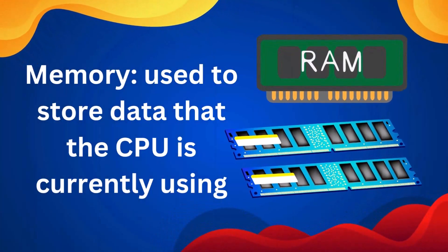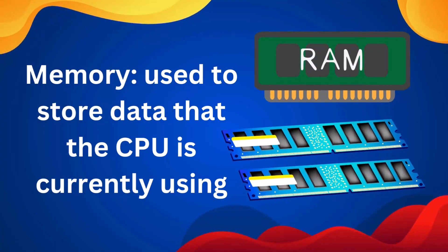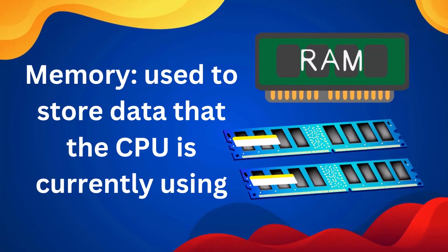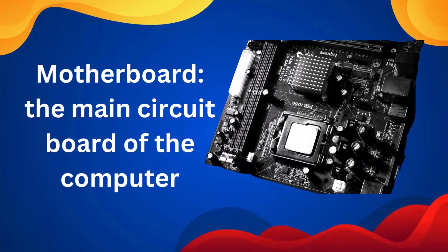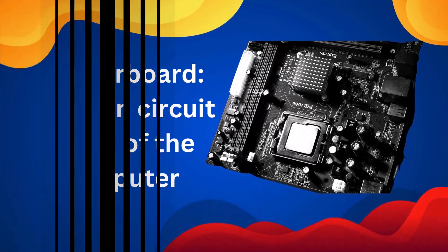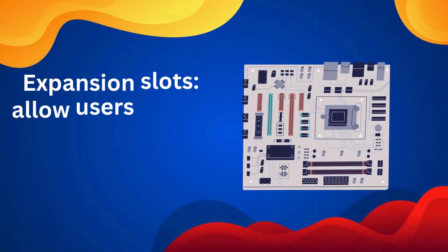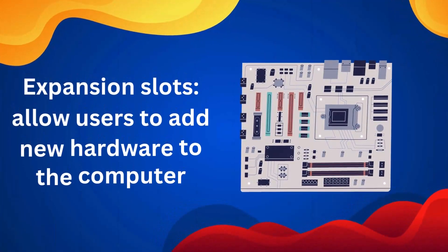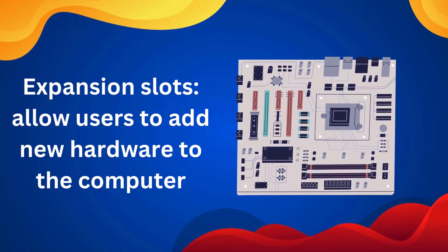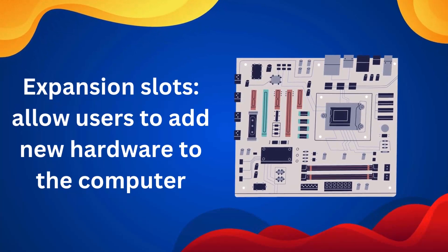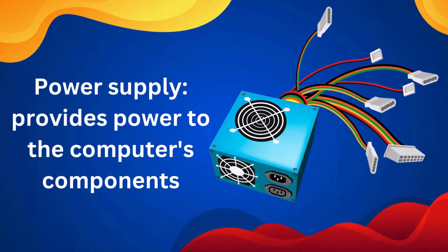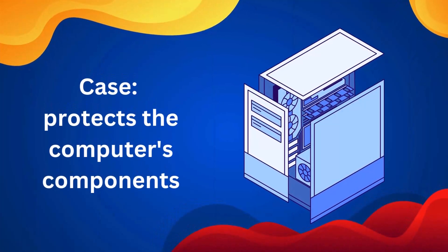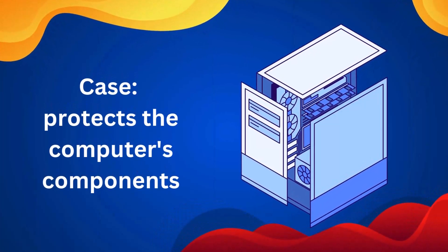Memory is used to store data that the CPU is currently using. The motherboard is the main circuit board of the computer. Expansion slots allow users to add new hardware to the computer. The power supply provides power to the computer's components. The case protects the computer's components.